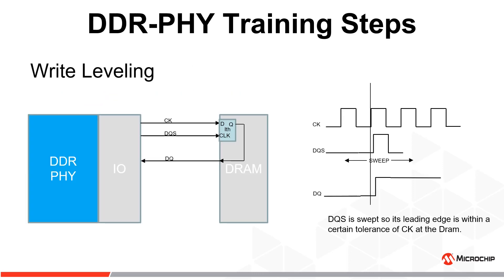Write leveling aligns CK with DQS for write cycles. When in write leveling mode, the state of CK is latched by the DRAM using DQS as the clock. The captured state of CK is sent back to the PHY over DQ, looking for a 0 to 1 transition. Once the transition is detected, write leveling is complete.